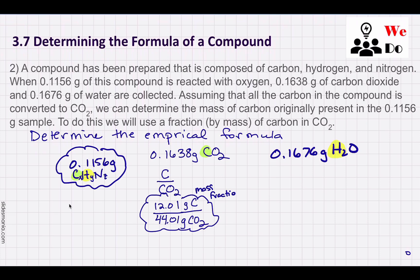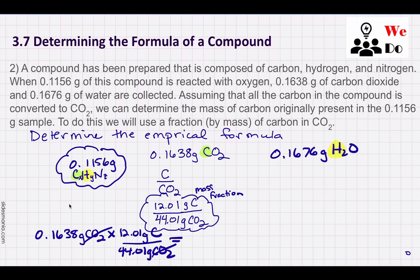We call this the mass fraction. I know I have 0.1638 grams of CO₂, so if I multiply by that fraction — 12.01 over 44.01 — I can find how many grams of carbon are in the CO₂ collected, which we assume equals the carbon in the compound. When I do this, I get 0.04470 grams of carbon.